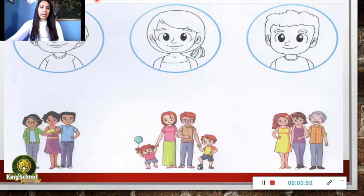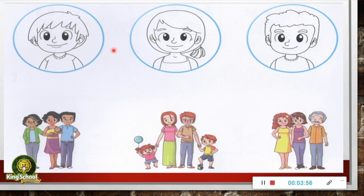I'm going to explain your activity on page number 40. Here we can find a boy, a girl, and another boy. How many members are there in this family? One, two, three, and four. There are four members in this family.